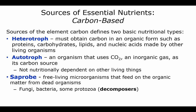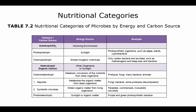Saprobes feed on dead things. They get their organic matter — their proteins, carbohydrates, lipids, nucleic acids — from dead organisms. They are also called decomposers: your fungi, bacteria, and some of your protozoa. Here is a table of nutritional categories of microbes by energy and carbon sources. Notice the chemo autotrophs — they get their energy from simple inorganic chemicals and this includes some bacteria in your archaea, like your methanogens and your deep sea vent bacteria. The chemo heterotrophs get it from other organisms: your protozoa, fungi, some of the bacteria, and animals. And here you have your saprobes — those are the decomposers: fungi, bacteria, and some protozoa.